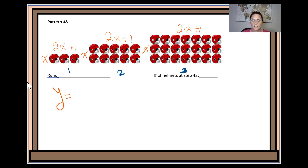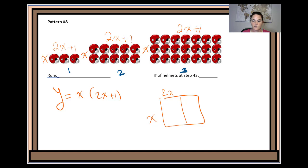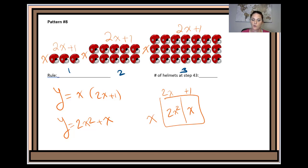For the rule, y is equal to x times (2x + 1). Using an area model to distribute, I get 2x² and then x. So y equals 2x² plus x. The first is factored form, the second is standard form of the quadratic. And again, I can replace x with 43 to figure out how many helmets would be at step 43.